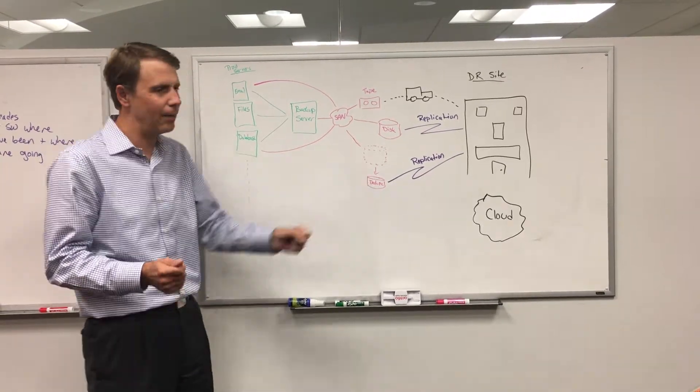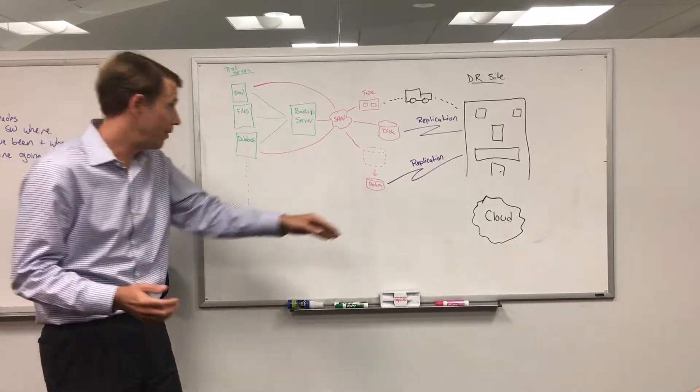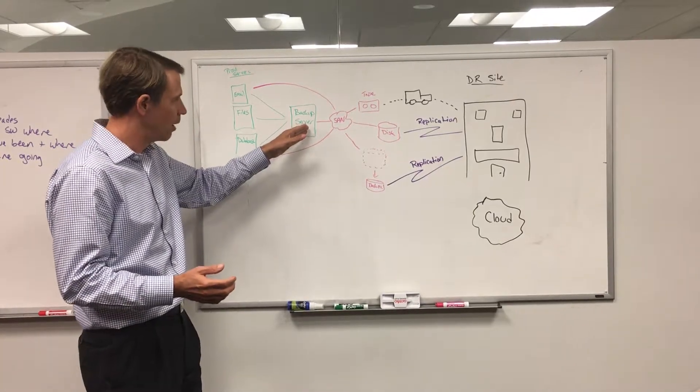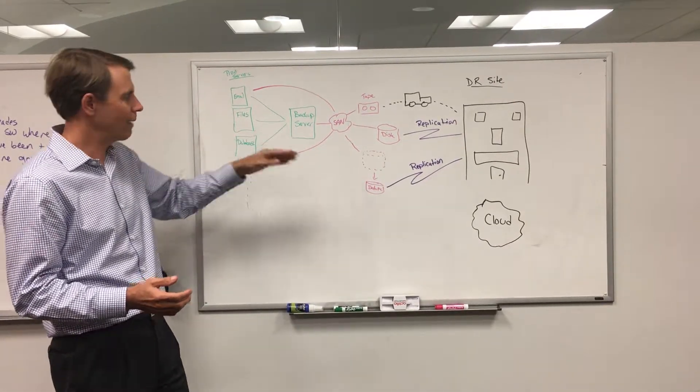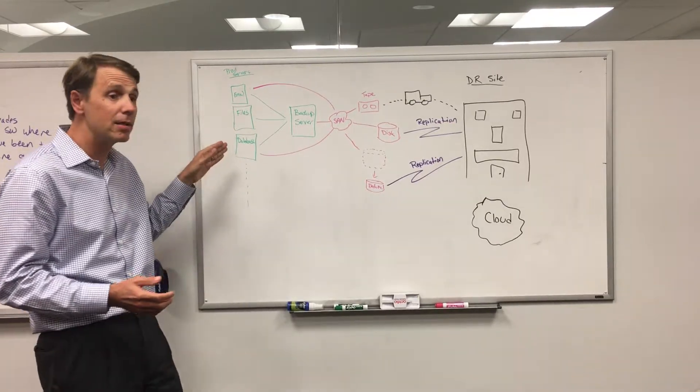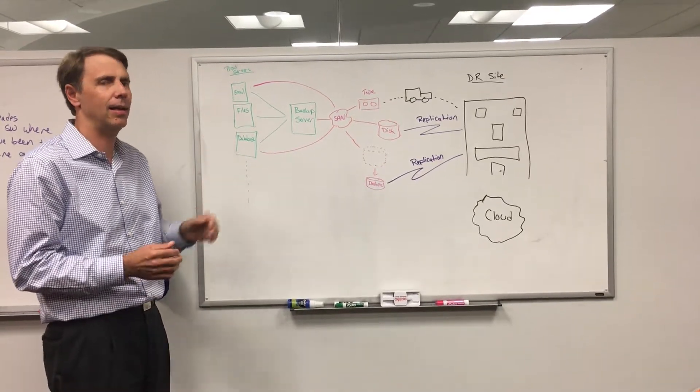So what that means generally is that recovery times can be a bit challenging because we want to recover the data in a dedupe environment. Well, first we have to undedupe it. Then we have to bring it back to the backup server. Then we have to bring it back to the database server. And only after we completed those three steps, can we then access the data?